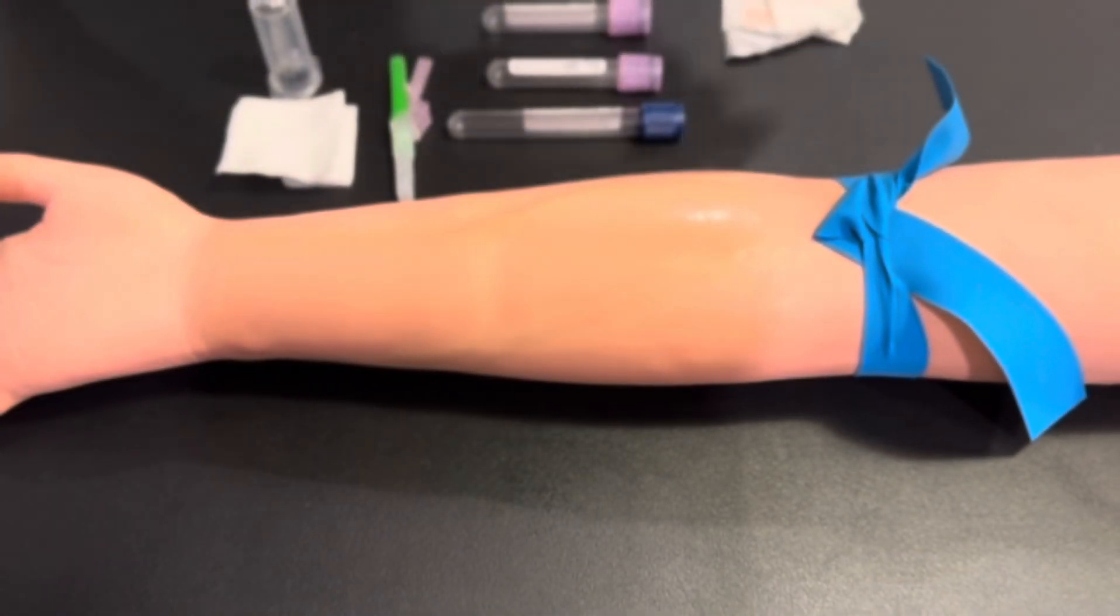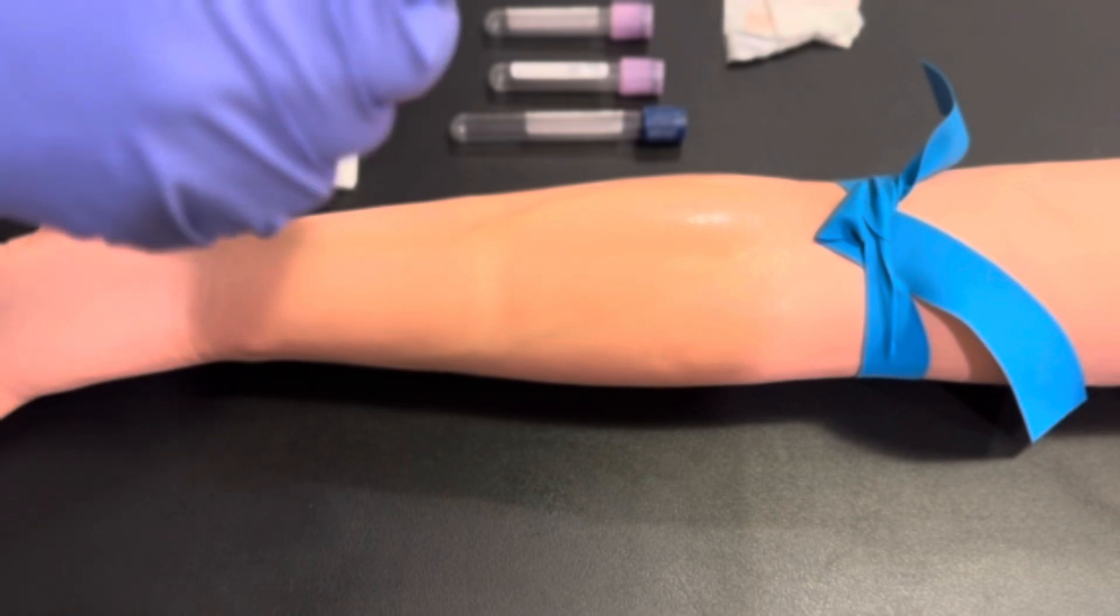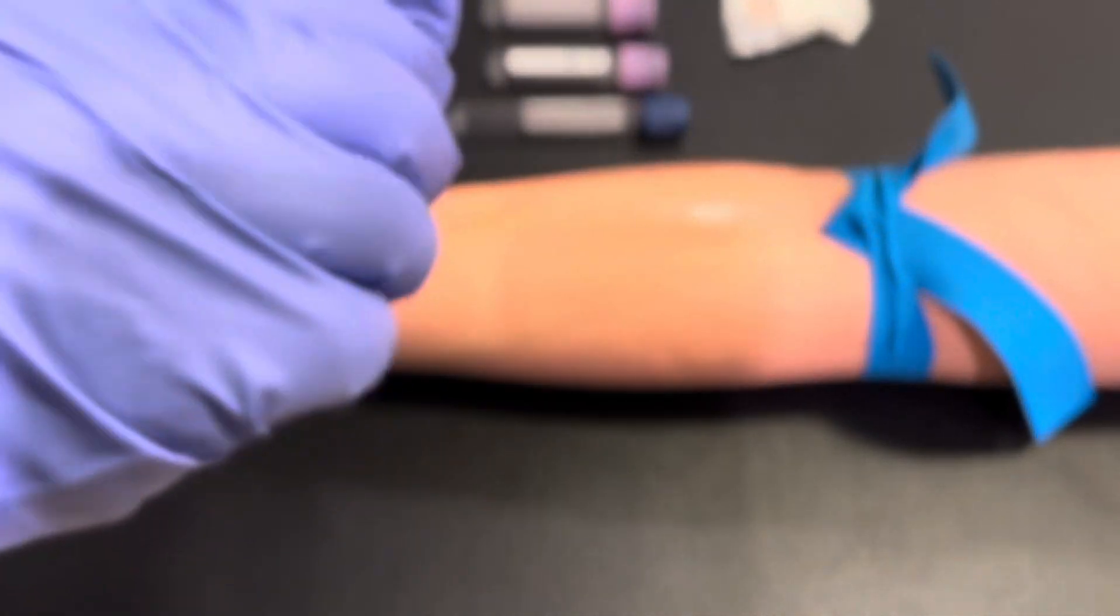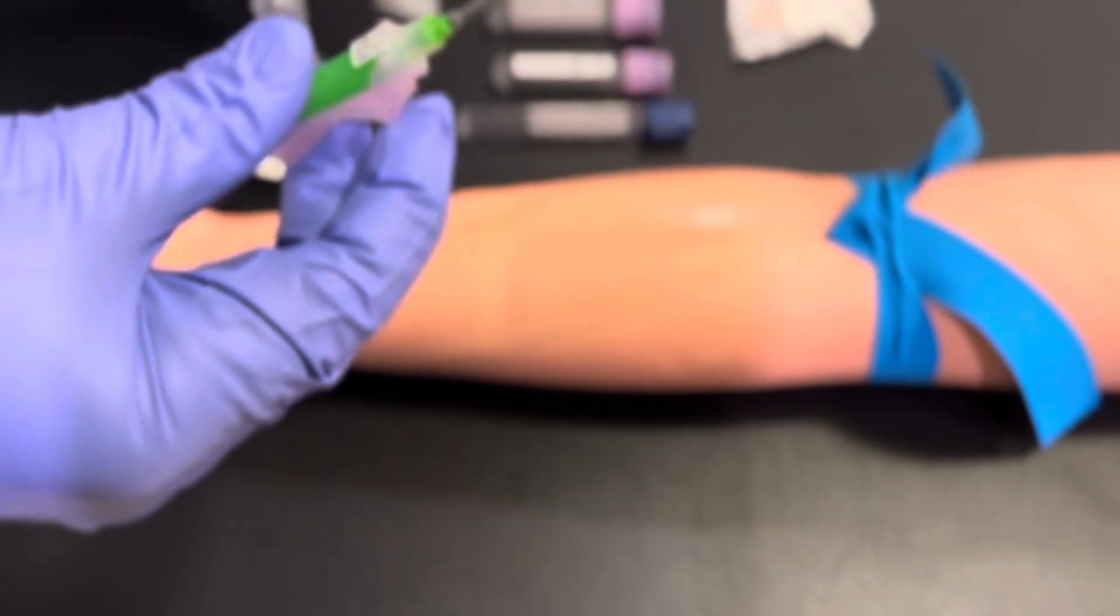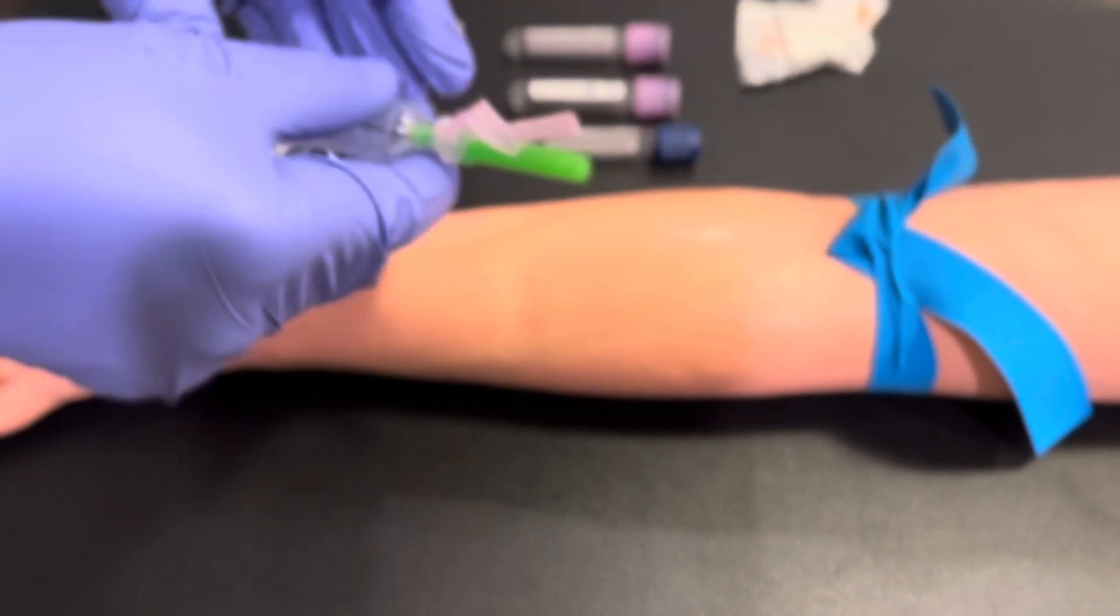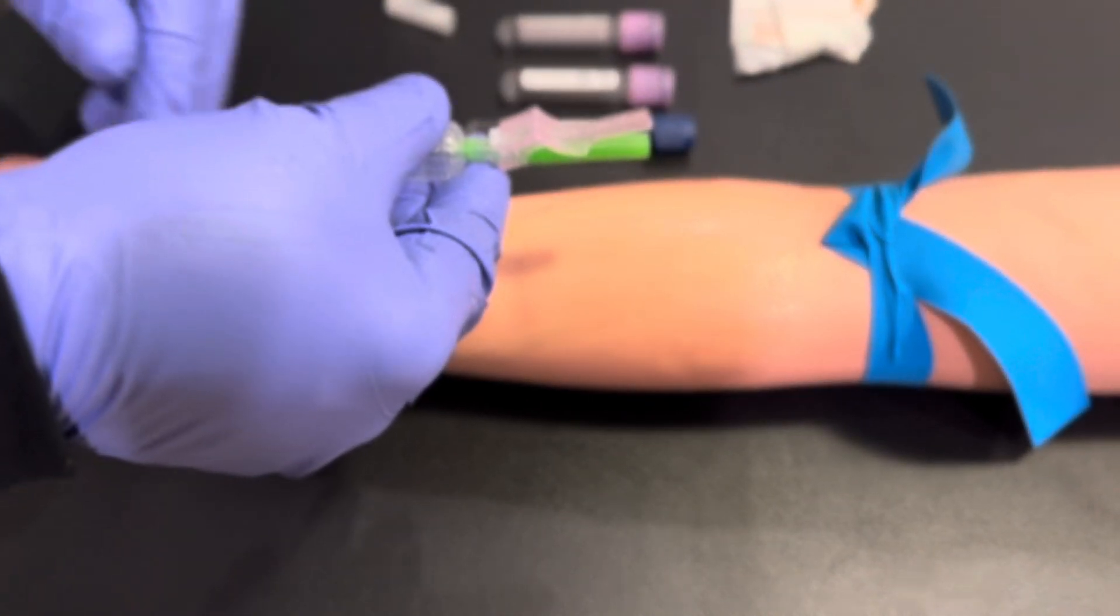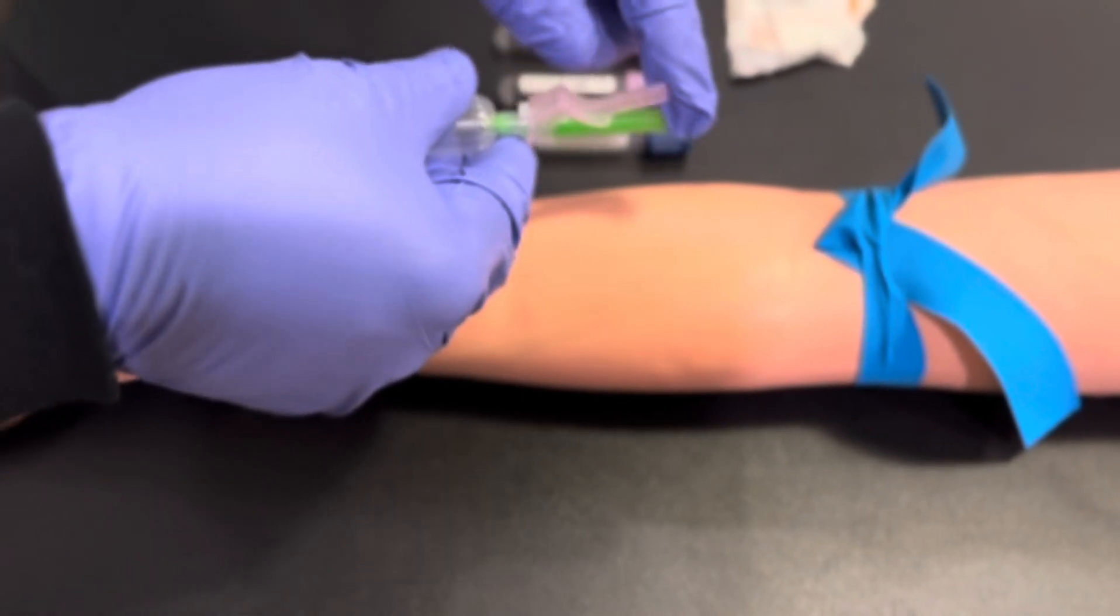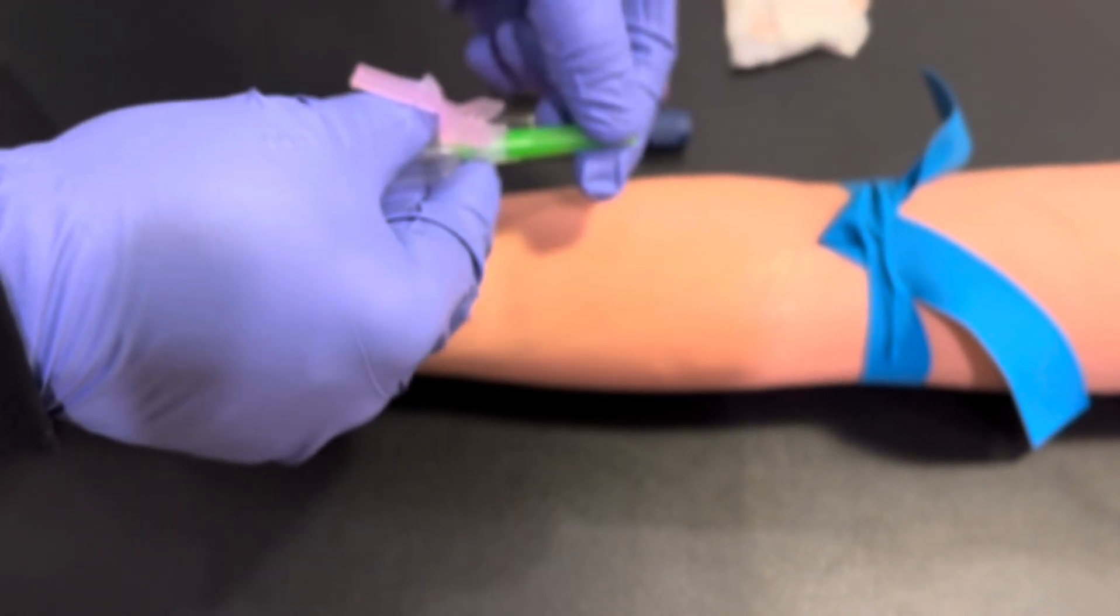Once the site has dried, please assemble your vacutainer straight needle into the vacutainer holder. Utilize the proper hand-holding guidelines to ensure that the needle is secure and stable.